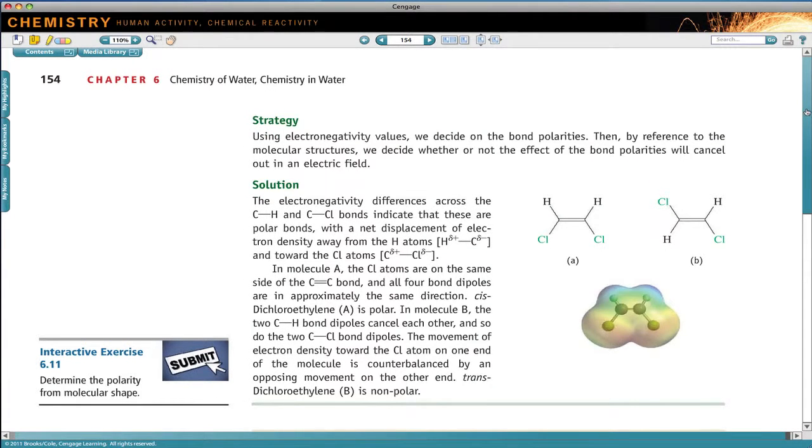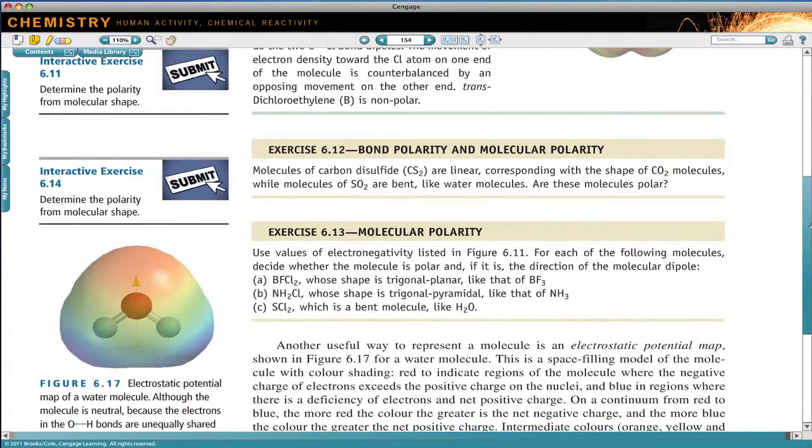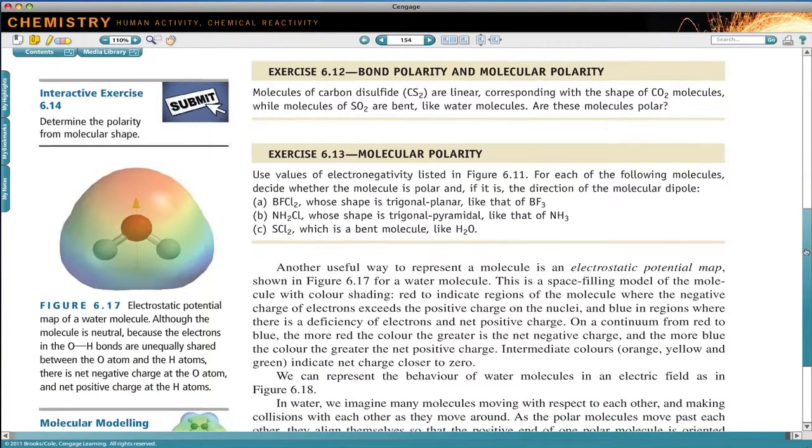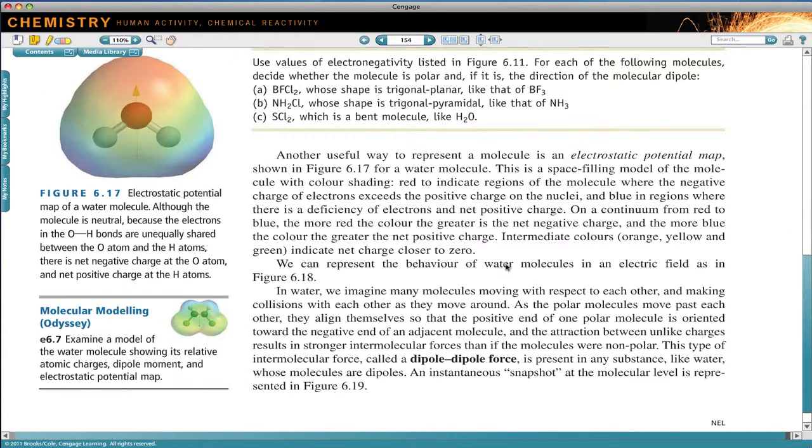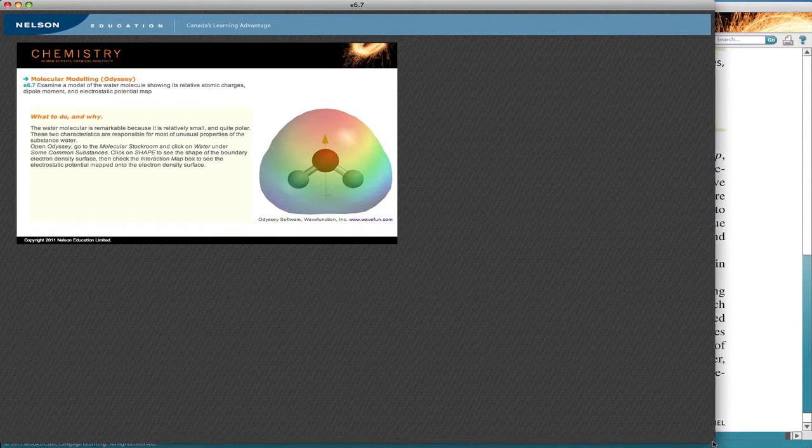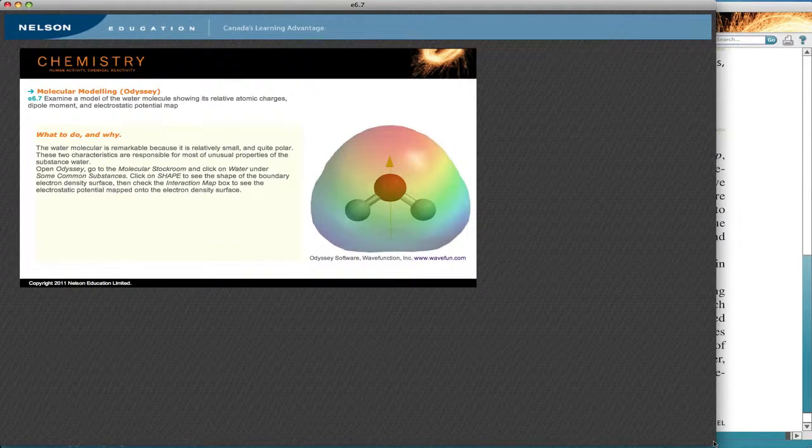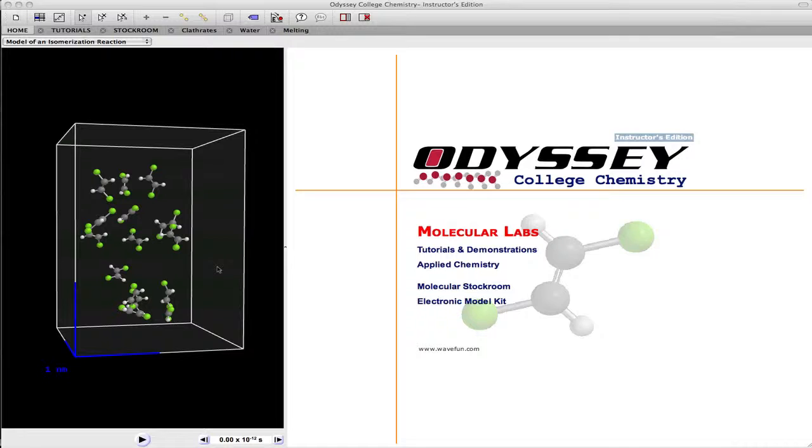Okay, so we come down. We've got some exercises on bond polarity and molecular polarity, and an introduction of the idea of what an electrostatic potential map is. And if we go to eResource 6.7, click on the icon. Up comes the springboard again. We've got some instructions here on what to do and why. And it says to go to Odyssey. So we'll open that up.